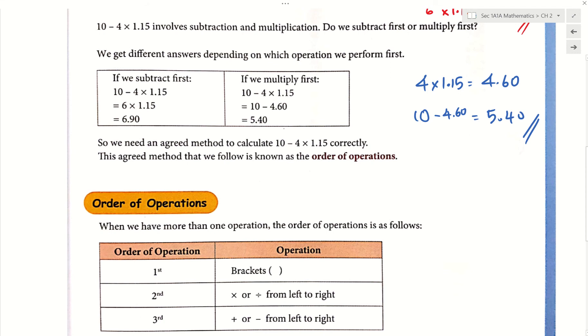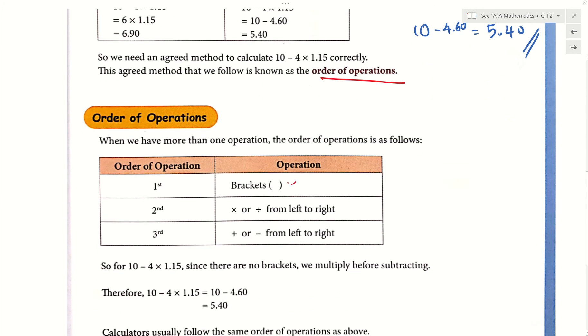This brings us to order of operations. What should we do first? Is it plus, minus, times, divide? What happens if there are brackets? You have learned in primary school something like BODMAS. You do the brackets first. Then you do the multiplication and division from left to right. Only after that, then you do the addition and subtraction from left to right.